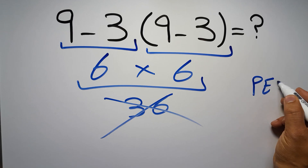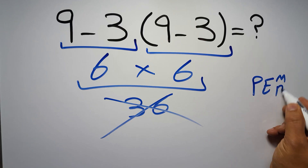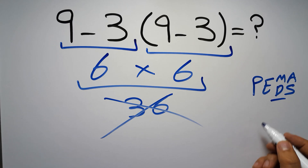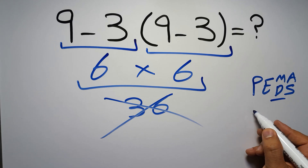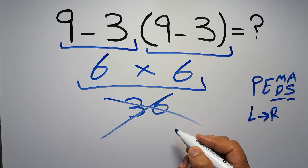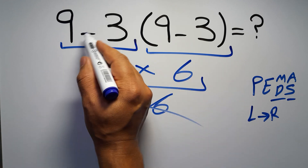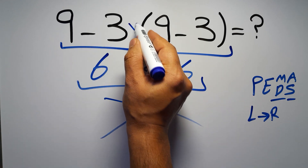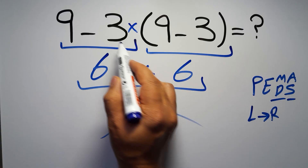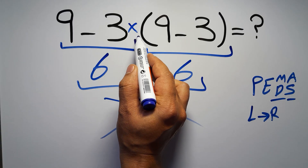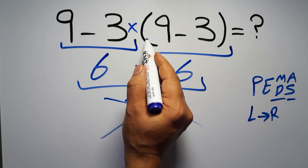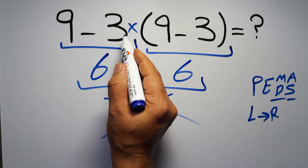We do parentheses first, then exponents, then multiplication or division, and finally addition or subtraction. Remember that multiplication and division have equal priority and we have to work from left to right, and the same applies to addition and subtraction. In this expression we have one subtraction, one multiplication, and one parentheses. Inside the parentheses we have one subtraction, and here we have a multiplication because in mathematics when a number is placed next to parentheses it means multiplication, and we usually don't write the multiplication sign for brevity.